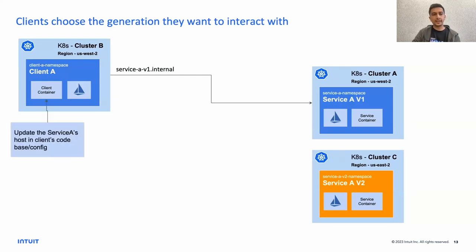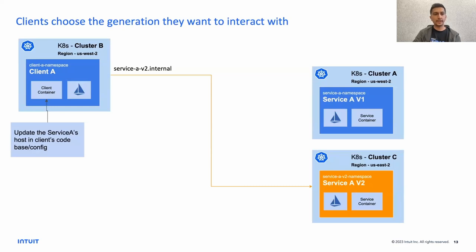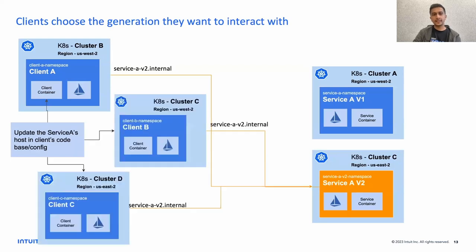The common method that service owners follow is to update their codebase or config to point to the new V2 stack. Client A modifies their endpoint to reach service A V2 using service-A-V2.internal. This is easy when one client is calling one particular service. But when there are multiple clients calling service A, all clients have to migrate to V2, meaning every client has to update their config repo or codebase to point to the new stack.